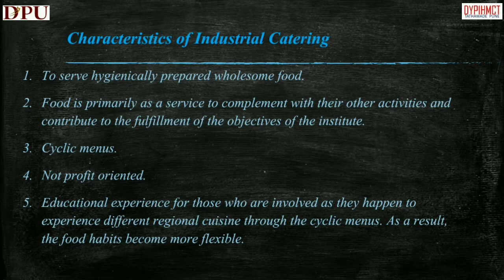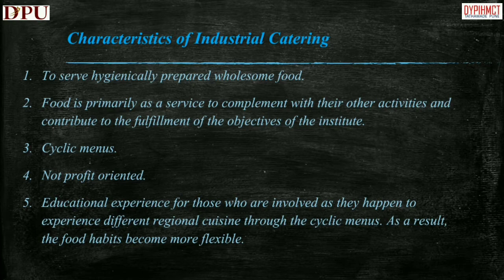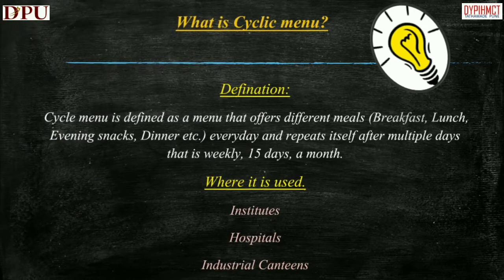Food service contributes to the fulfillment of the objectives of the organization. The third characteristic is the cyclic menu, which we shall understand in the next slide. The fourth characteristic is that industrial catering is not profit-oriented — it is a basic food service facility for industrial employees with no motive of earning profit. The last characteristic is the educational experience for those involved in the catering, as they experience different regional cuisine through the cyclic menus. As a result, food habits become more flexible, and workers from different regions are introduced to food they never had before.